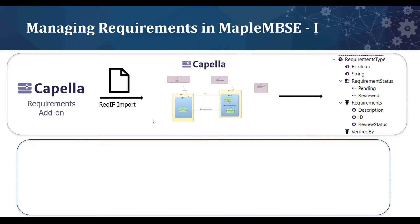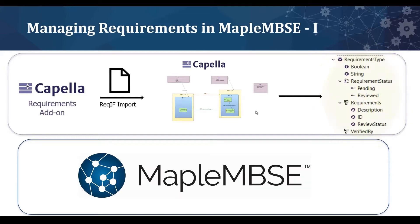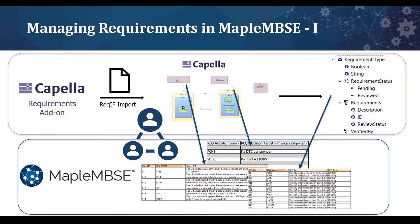For example, in your Capella model you may have used the requirements view add-on to import requirements, define new attributes, enumerations, and types for your requirements. Maple MBC will be able to access the different attributes and enumerations and display them in Excel.